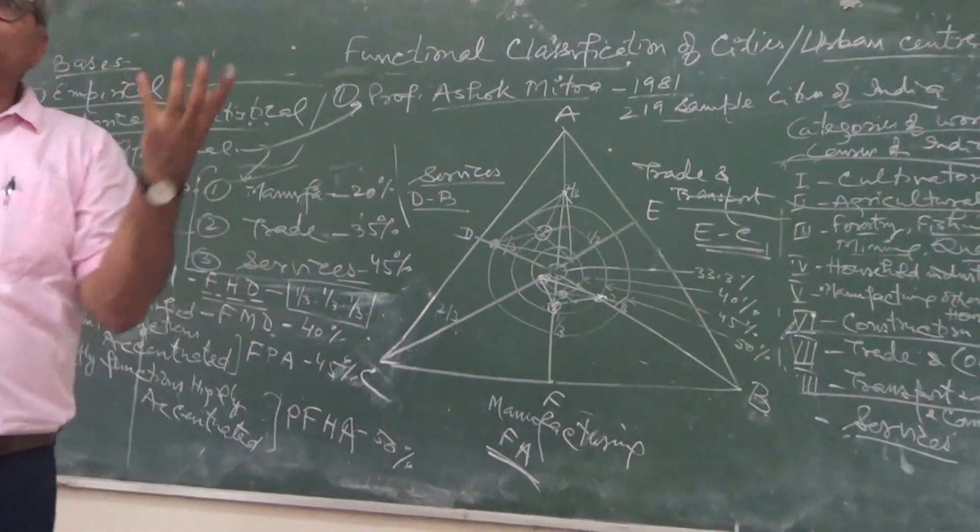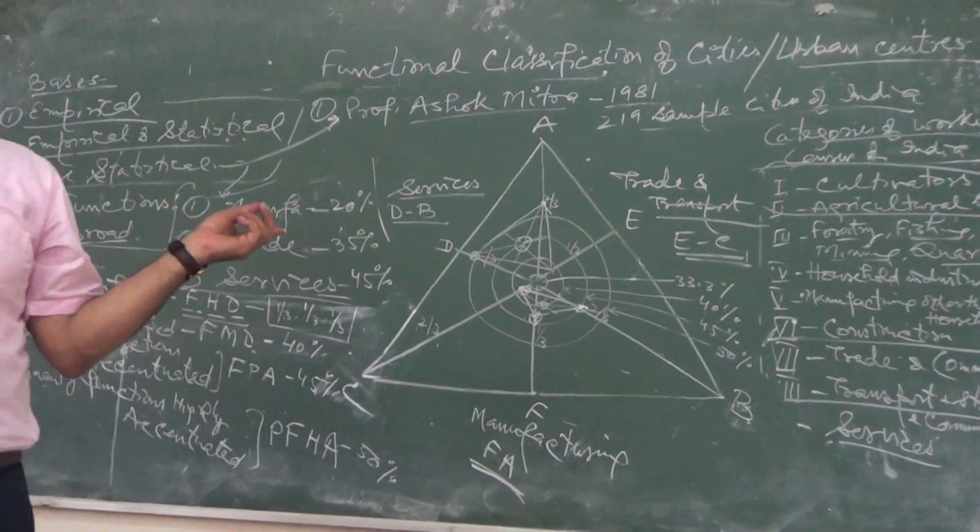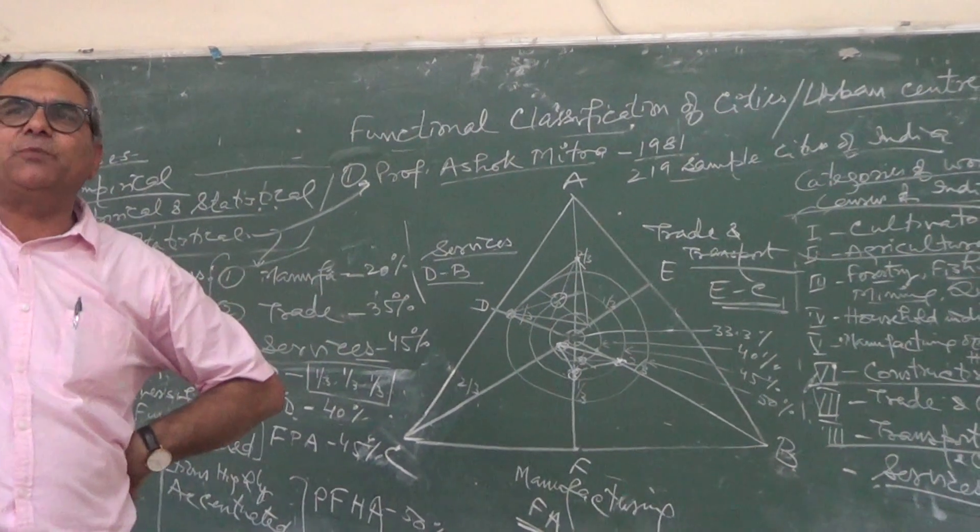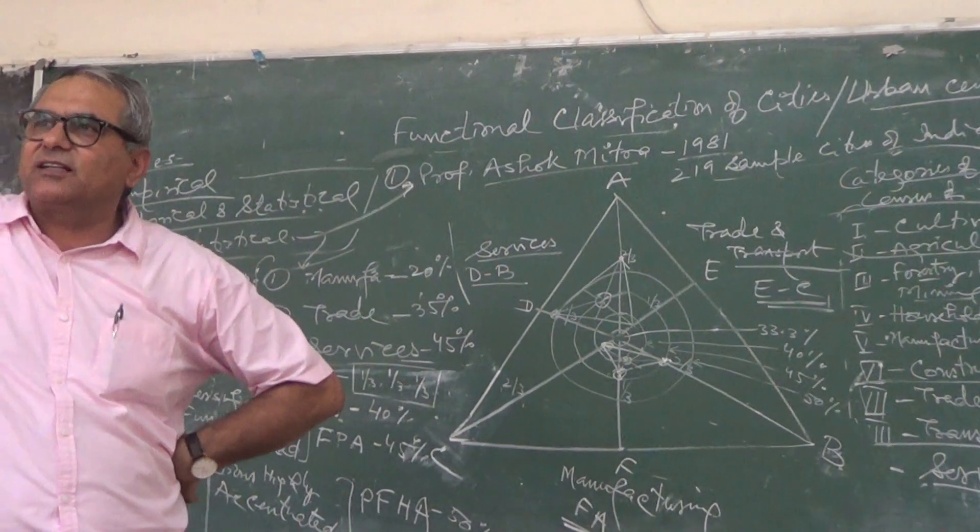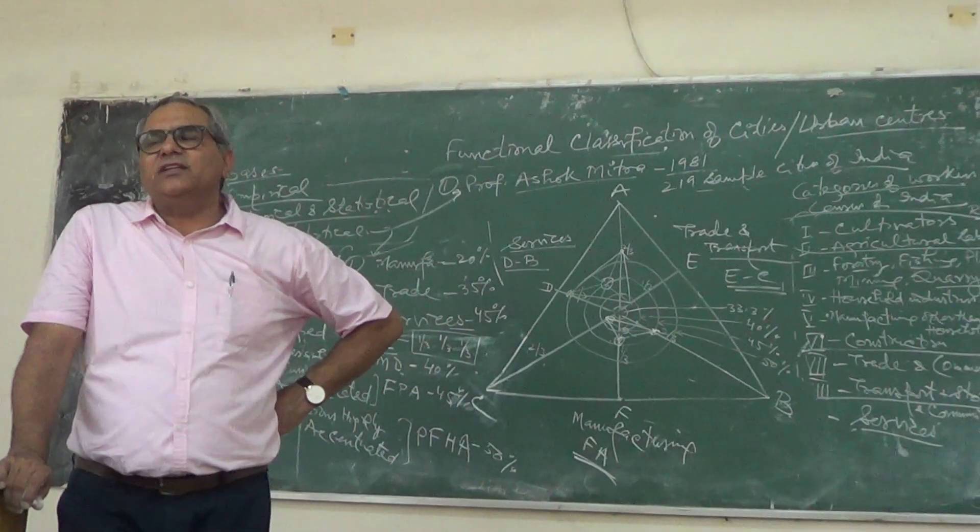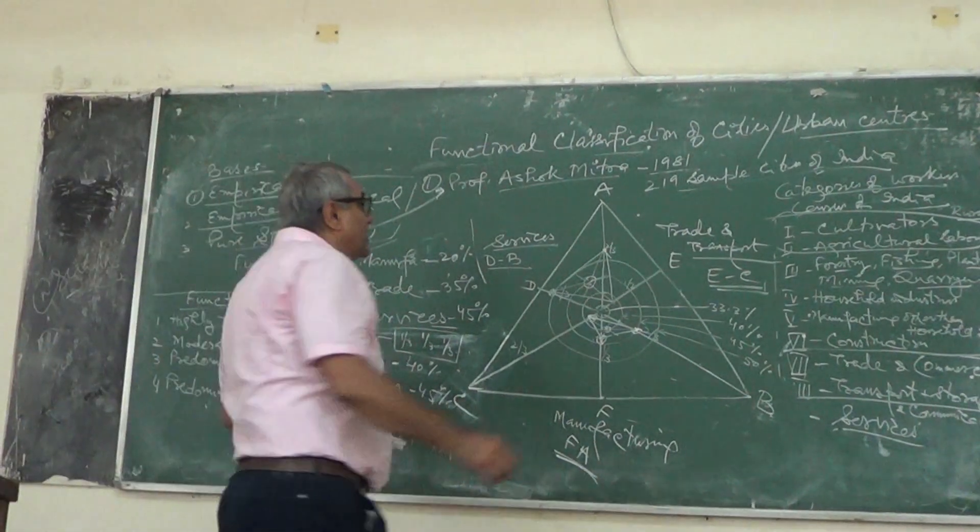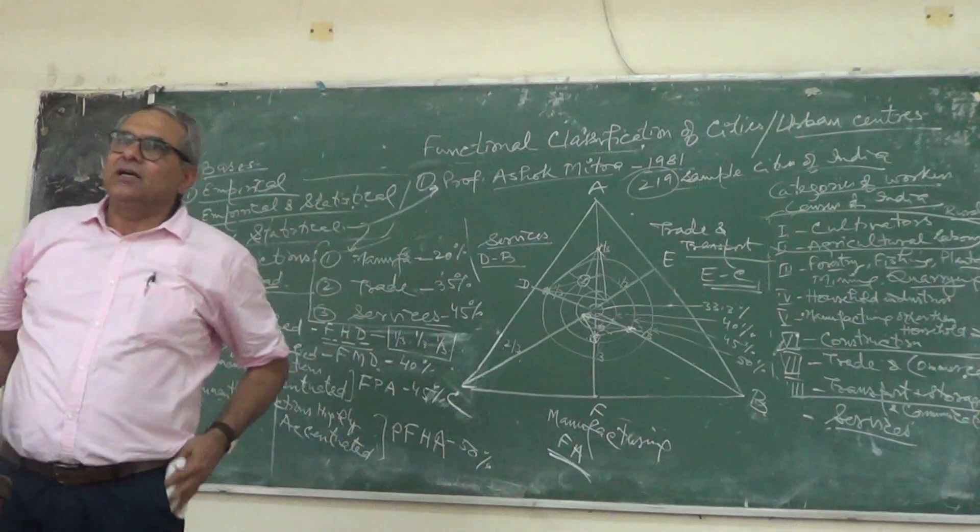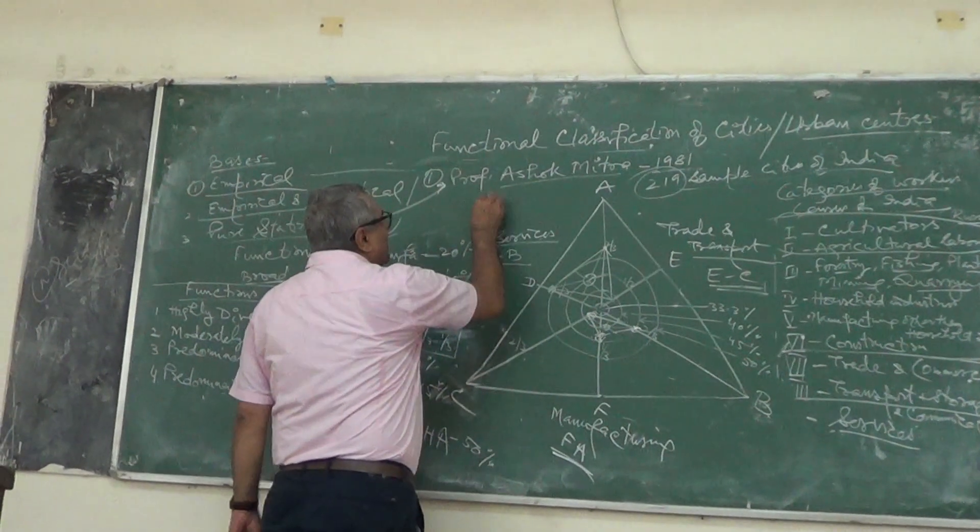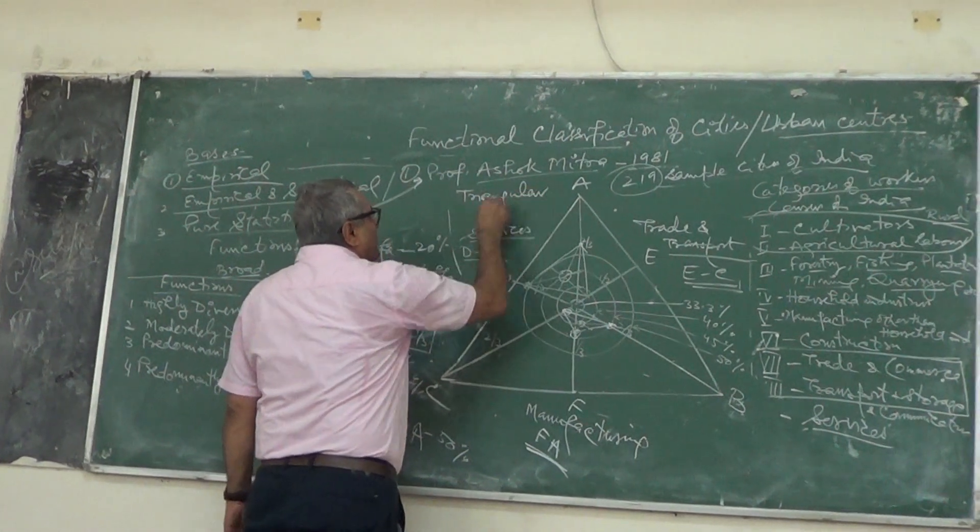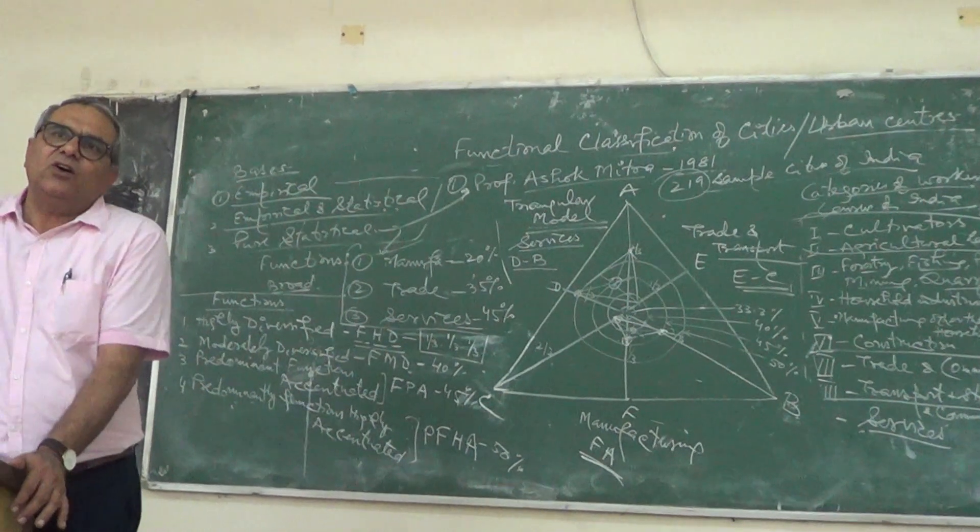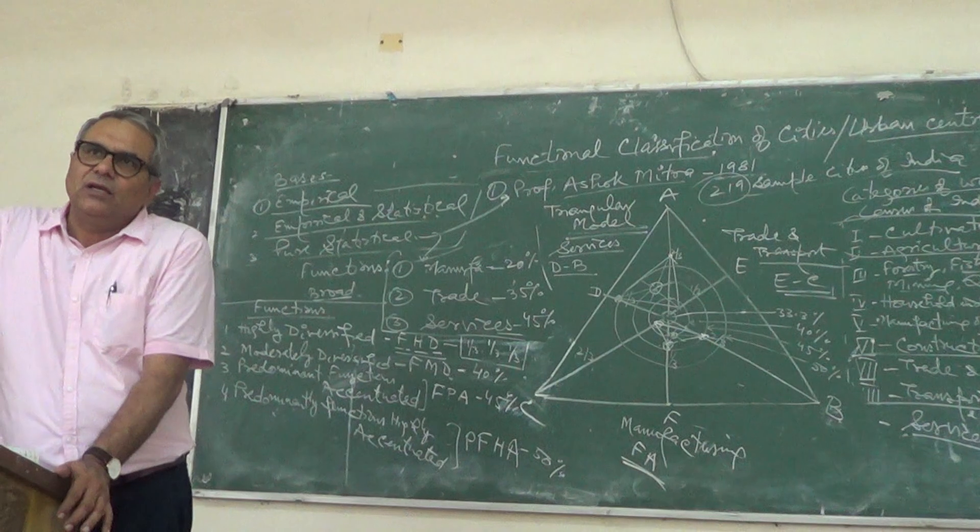I hope you can understand the use of this triangle. Just note it down here fully, practice at your home how we can divide the distribution of working population. This is a pure statistical technique to classify different urban functions given by Professor Ashok Mitra, who used 1981 census of India and 219 sample settings of India. So this is triangulation model he applied - triangulation model used to classify the different functions, to find out the different functions of cities.